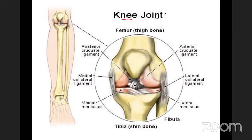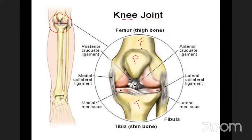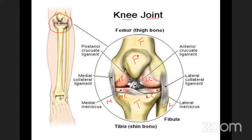The knee joint is formed by the femur, tibia, and patella. The medial condyle of the femur, lateral condyle of the femur, medial condyle of the tibia, and lateral condyle of the tibia, along with the patella, form this knee joint.